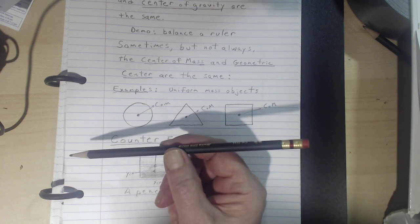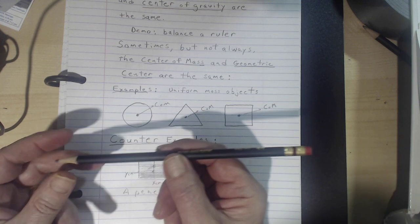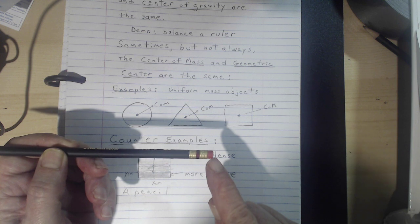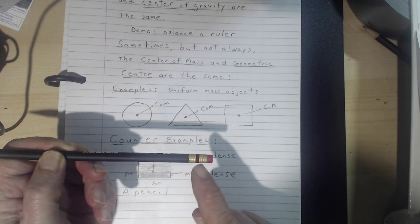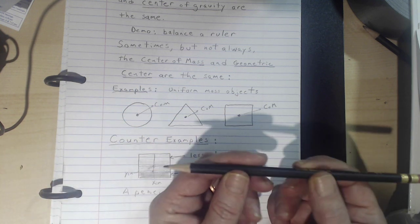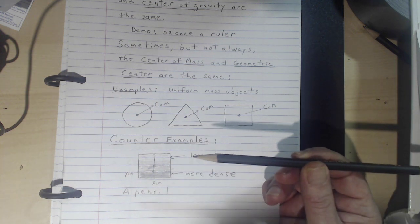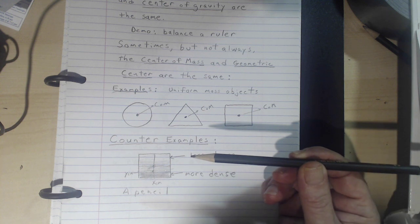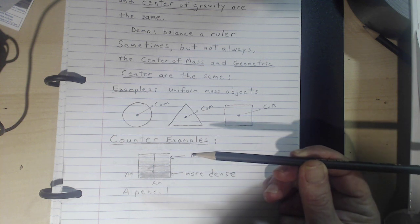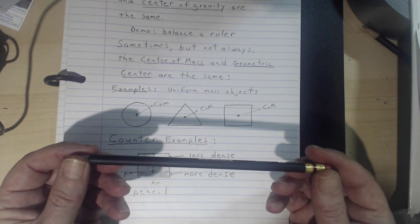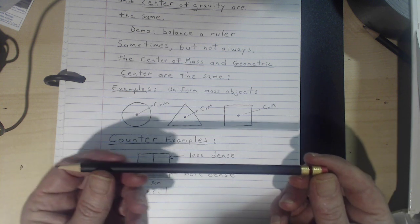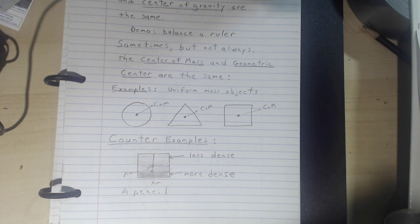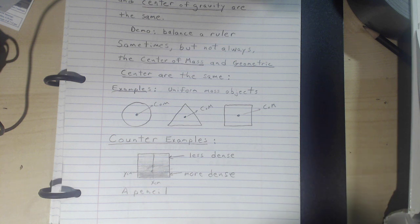Here's another case: a pencil with an eraser. The eraser has a different density than the wood, which differs from the metal ferrule, and at the tip the wood is shaved down to exposed lead — a very low density. If you use the shape to find the geometric center, that will be very different from the center of mass. Hopefully that nomenclature is clear: center of gravity and center of mass are interchangeable, but don't confuse center of mass with geometric center.